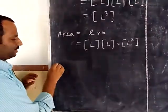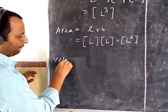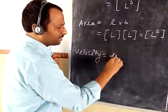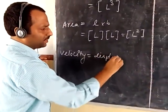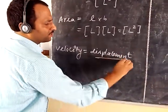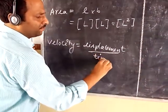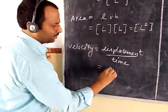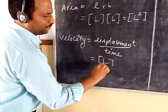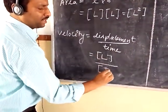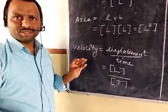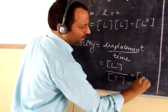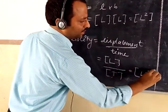Next, velocity. Velocity is defined as displacement upon time. Displacement is something like length, so its dimension is L. And the dimension for time is T. So the dimension for velocity will be L T to the power minus 1.